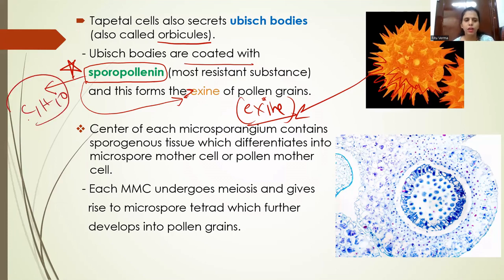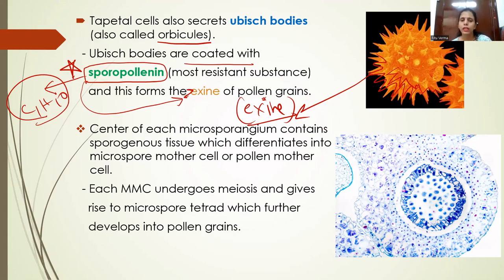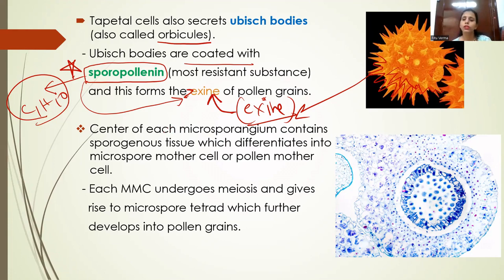The function of the exine is to protect the male gamete present inside the pollen grain. When the pollen grain is carried by pollinating agents such as wind, water, insects, or bees, it will not germinate until it finds a suitable stigma. The exine keeps the pollen grain safe under unfavorable conditions. Another important function of the exine is that it prevents desiccation — that is, it prevents water loss from the pollen grain.